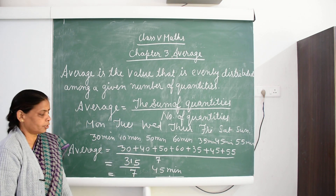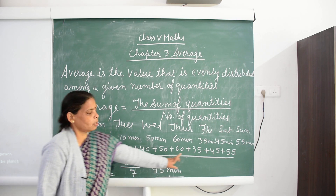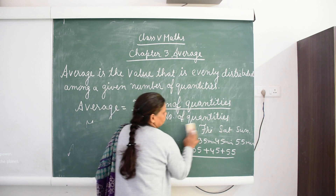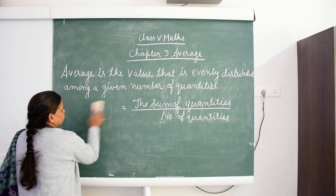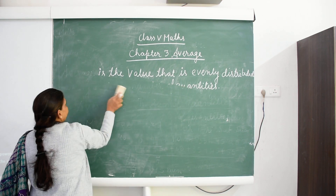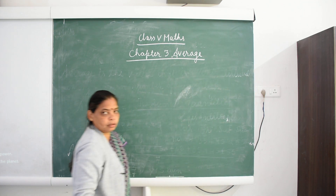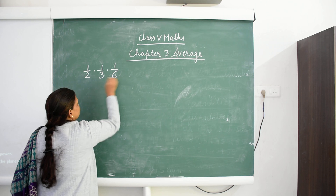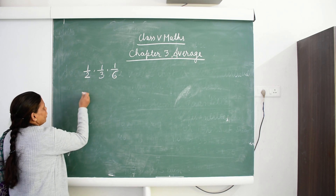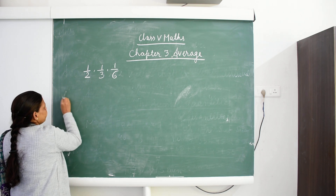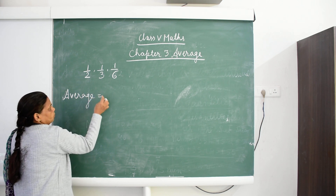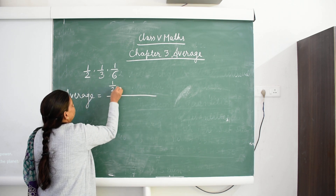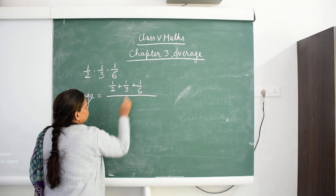The average study time is 45 minutes. You can distribute these 45 minutes equally to all these numbers. Now we will find the average of fractions: 1 upon 2, 1 upon 3, and 1 upon 6. We put the same formula here: 1 upon 2 plus 1 upon 3 plus 1 upon 6, upon the number of quantities which is 3.